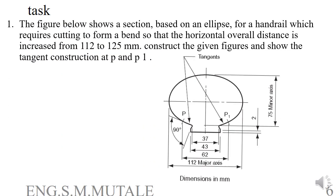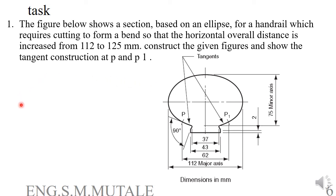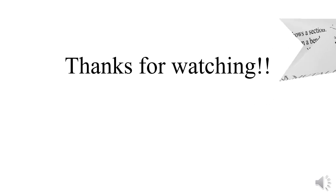With that covered, students should be able to attempt the following task. The figure shows a section based on an ellipse for a hydro-pipe which requires cutting to form a bend, increasing the horizontal overall distance. Construct the given figure and show the tangent construction at points P and P1. The tangent and the reference line should meet at 90 degrees, with a 2mm offset on each side. Thank you for watching.